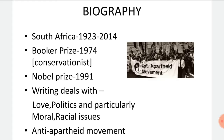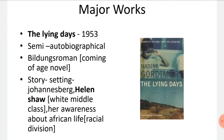Apartheid lasted until the 1990s. That is why most of her works are based on the themes of love, politics, and particularly on moral and racial issues. In brief, Nadine Gordimer was deeply concerned about racial discrimination in South Africa, and therefore she took the theme of racial issues for most of her works.